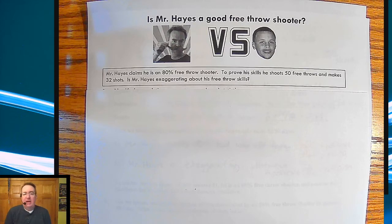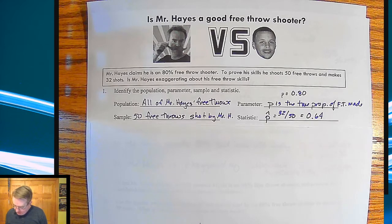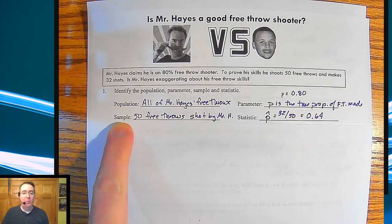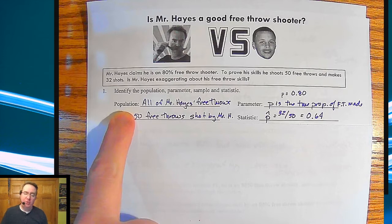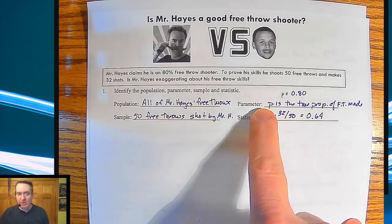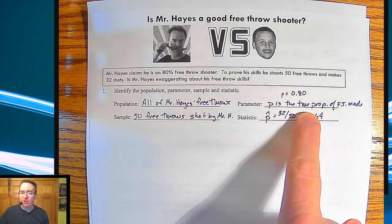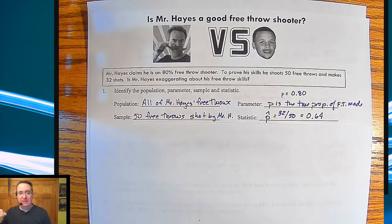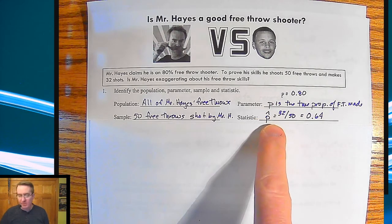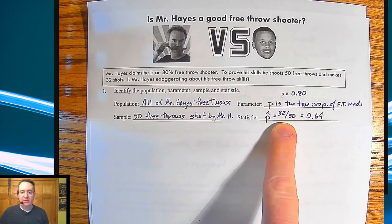So am I exaggerating? First things first, you need to describe what we're talking about. We need to describe the population — where are we pulling the sample from? My population is all the free throws I've taken. The sample is just the 50 specifically that we're counting here. The parameter is my claim of 80% — that's the true proportion of free throws made. We're going to assume that the 80% is valid. And my sample proportion, P-hat, is 64% — I made 32 out of 50.